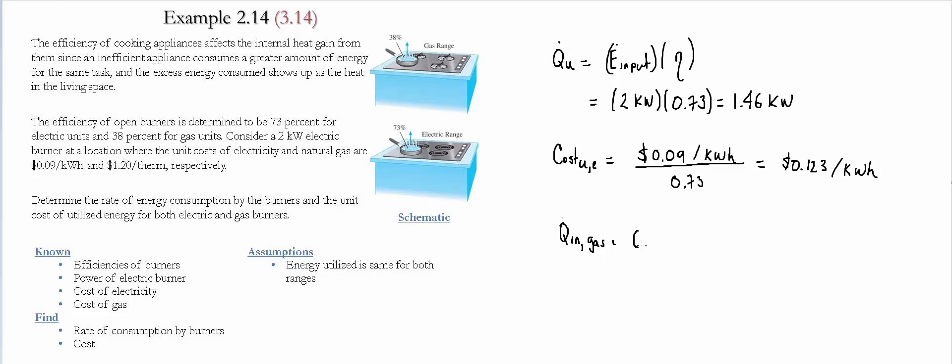So it's going to be Q_utilized that we had before, and we're going to divide it by the efficiency of the gas. So we're going to use 1.46 kW, and the efficiency of the gas range is 0.38. This gives us 3.84 kW.